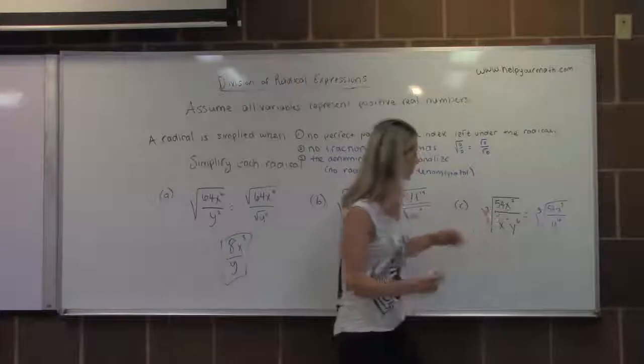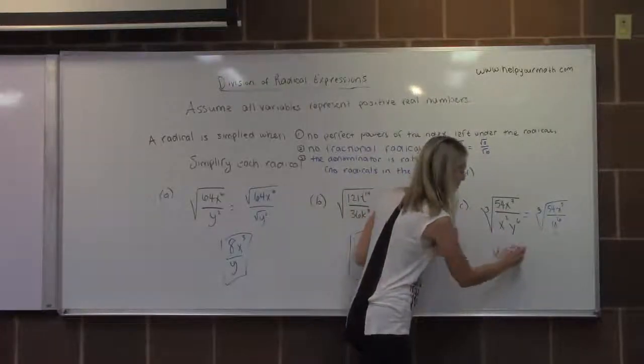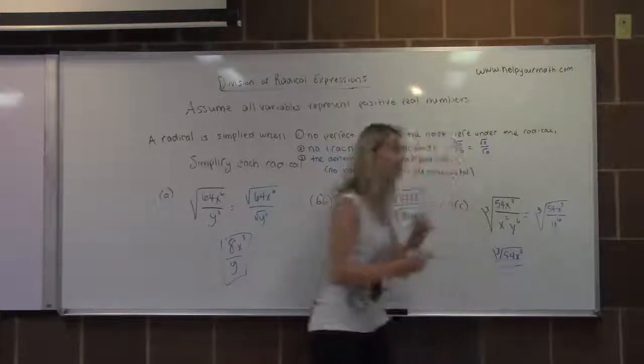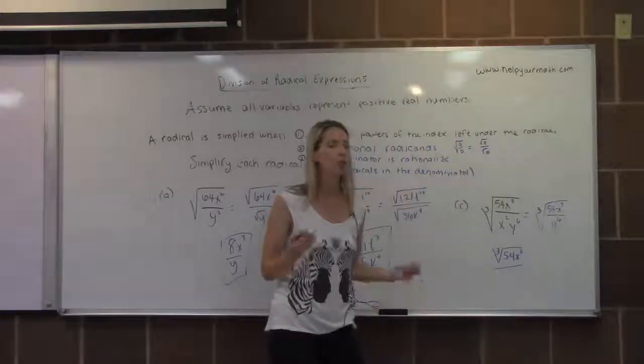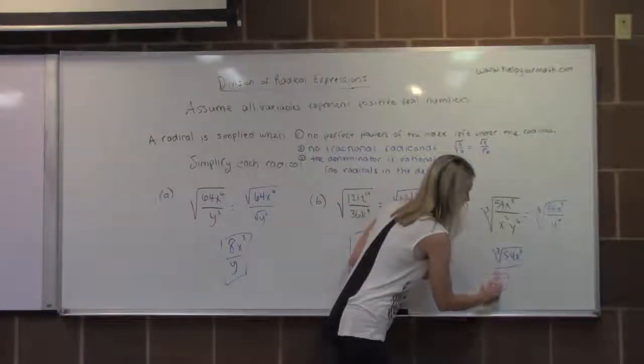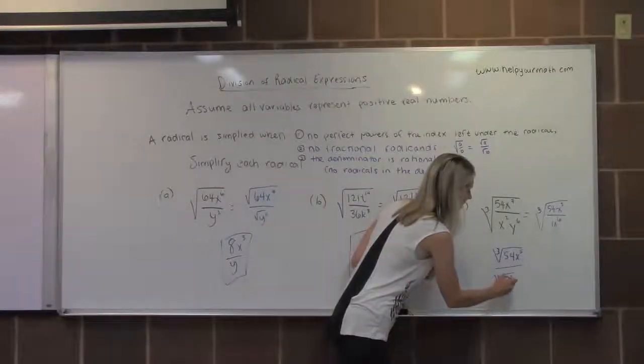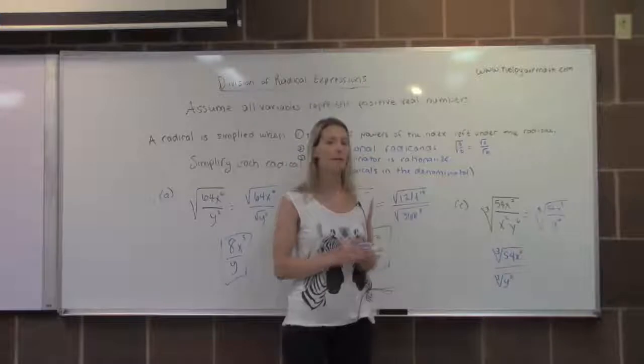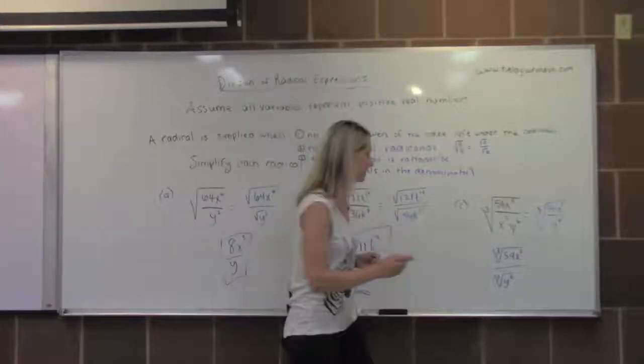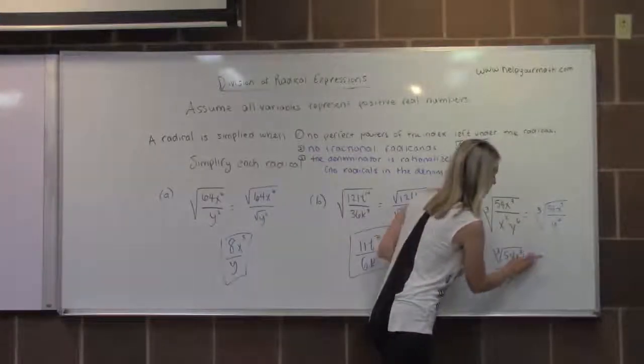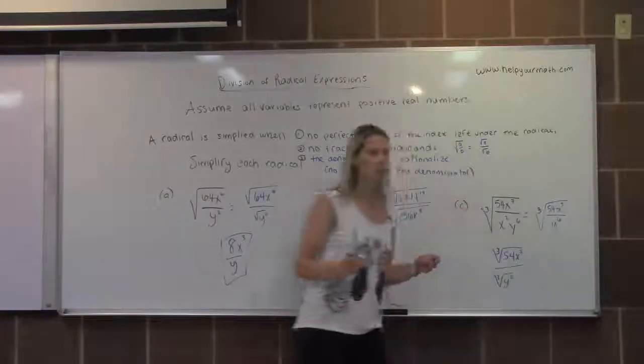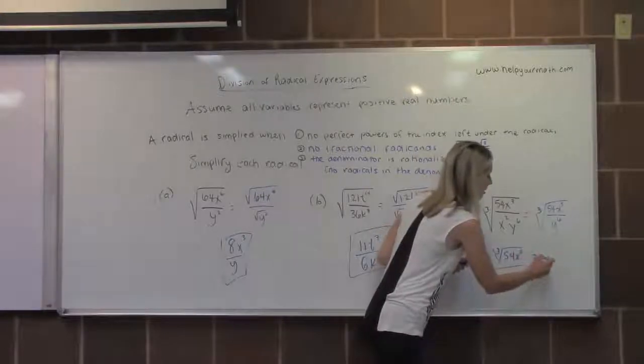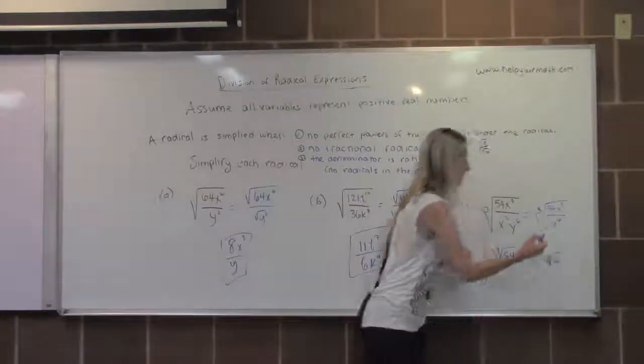Now I'm going to split up the two. I'm going to rewrite the numerator as the cube root of 54x to the fifth, being very careful that I bring that index of three with me. Then this would be the cube root of y to the sixth. I want to clean up the numerator as much as I can. 54 is not a perfect cube, but it does have a perfect cube factor of 27. So 54 is 27 times 2, and the cube root of 27 is 3. I'm going to pull out a 3 and then do the cube root of 2 stuck under the radical.